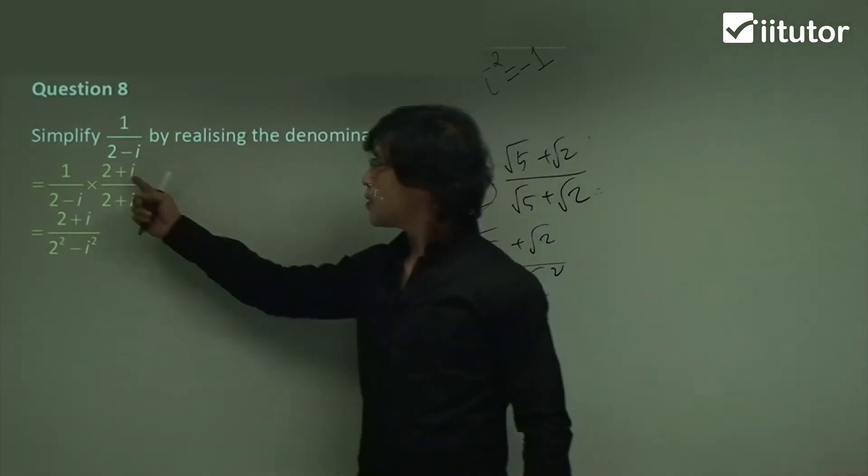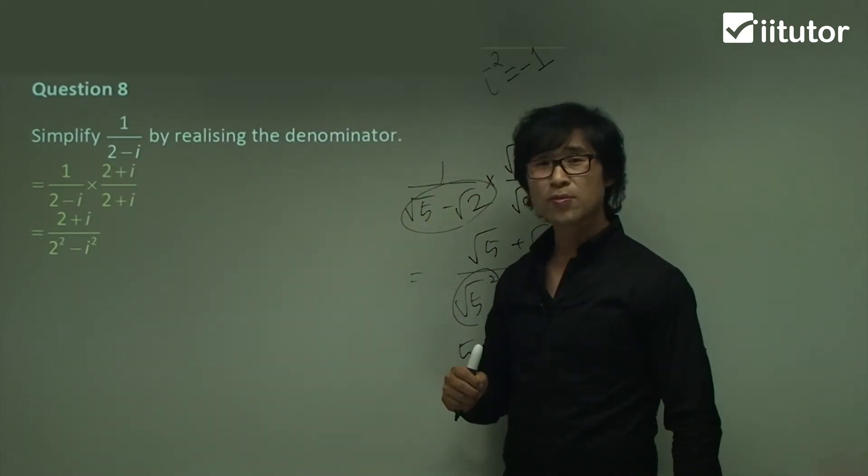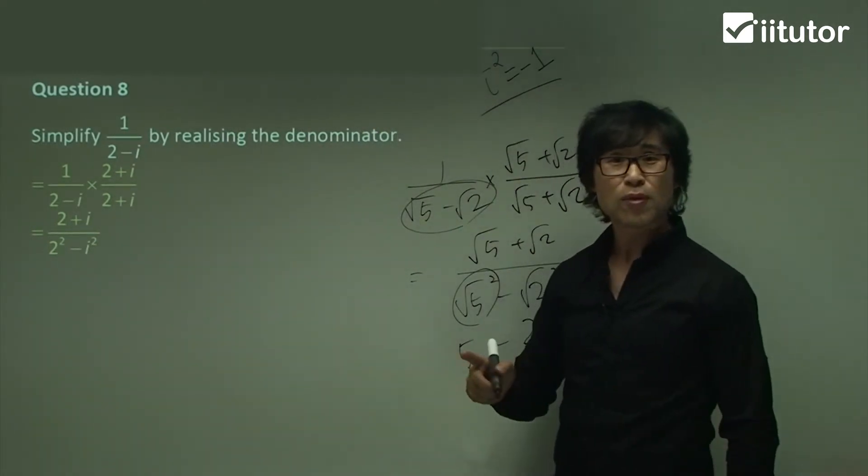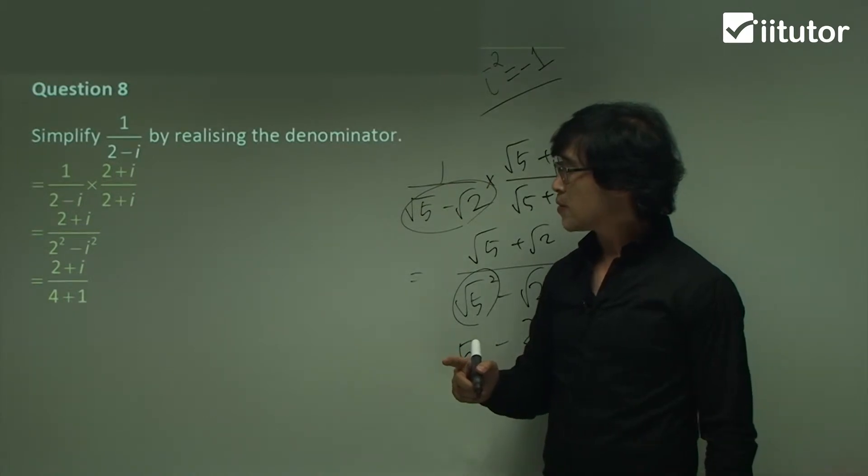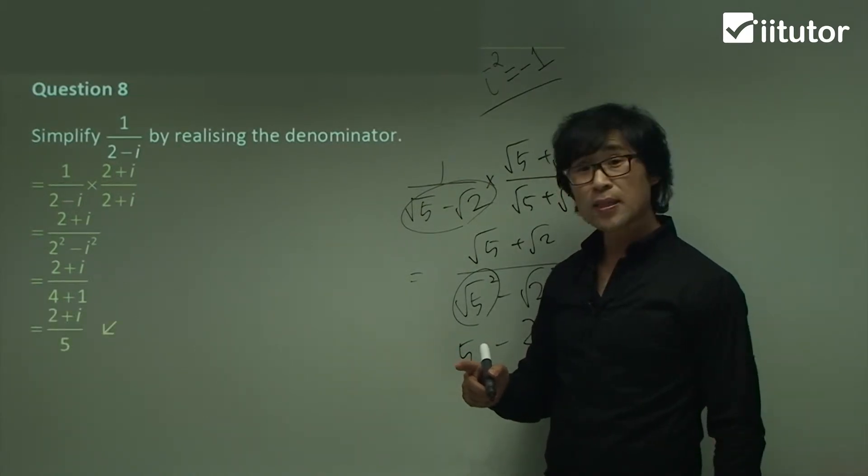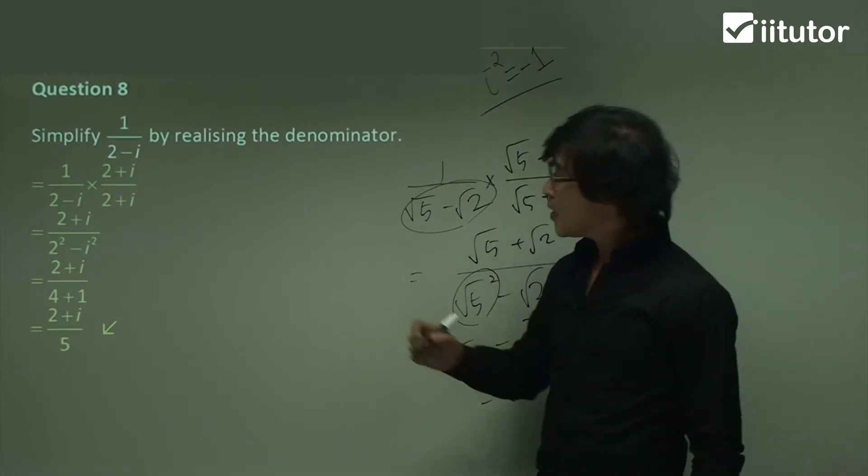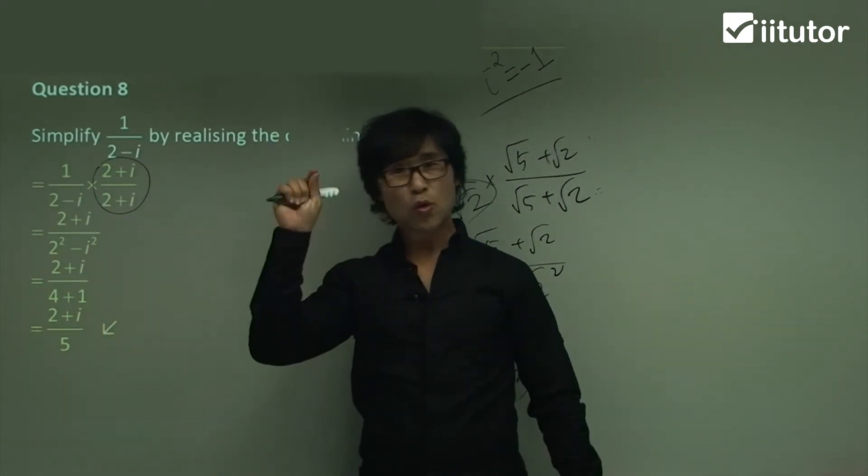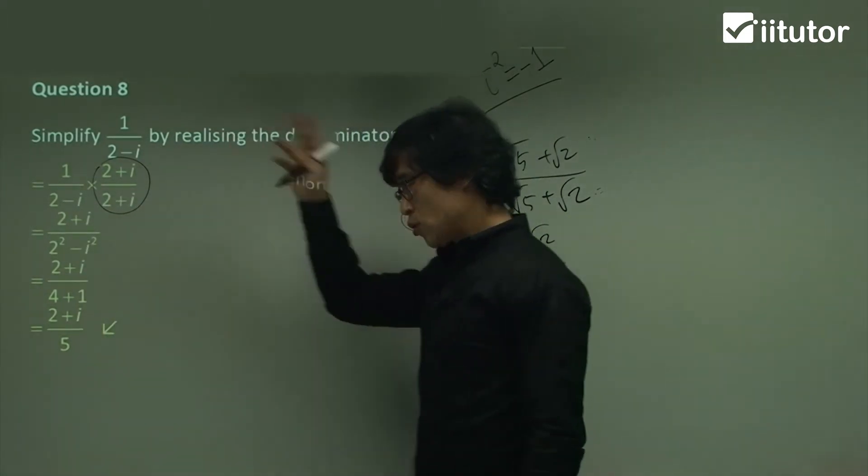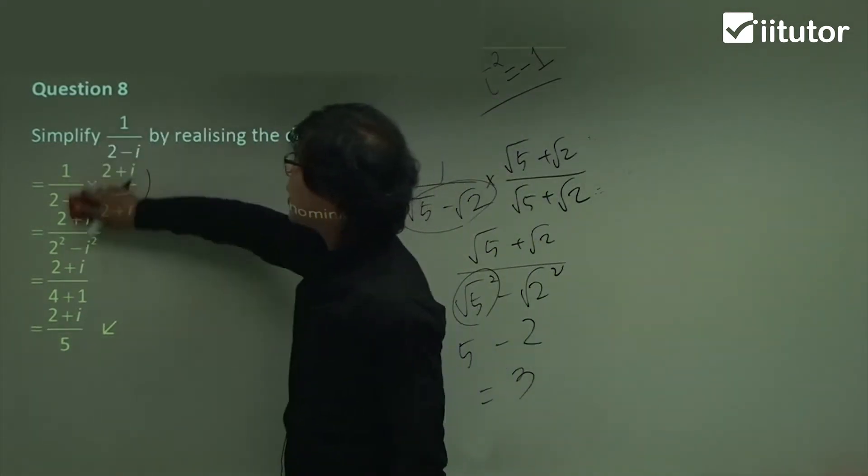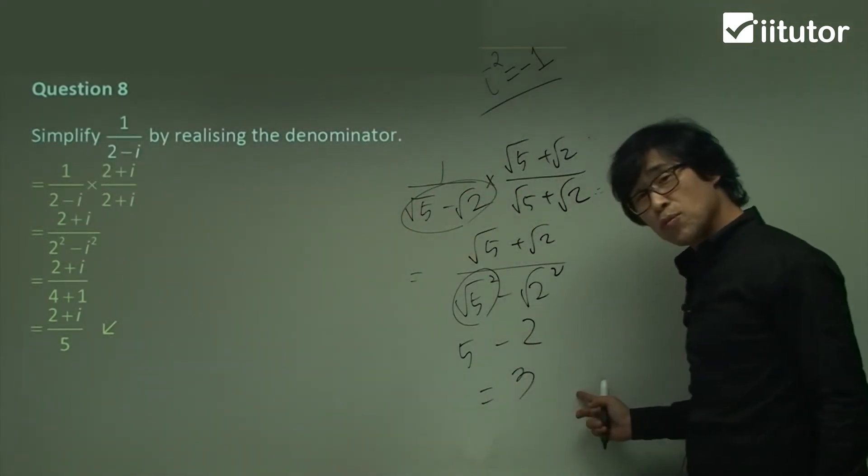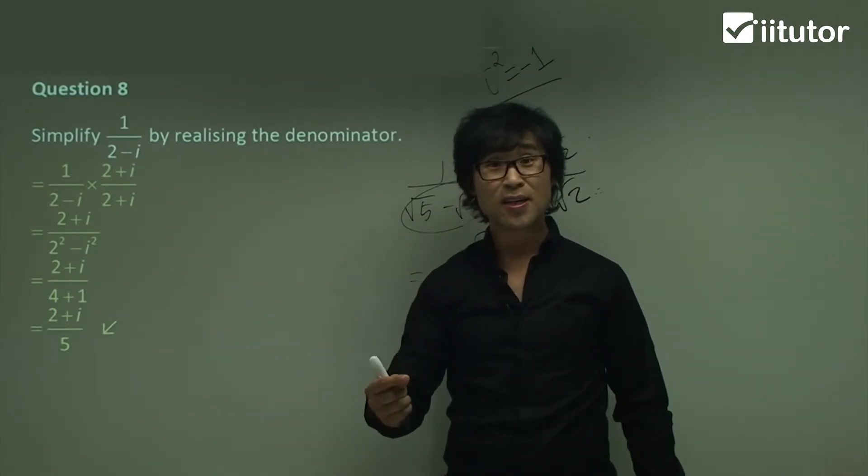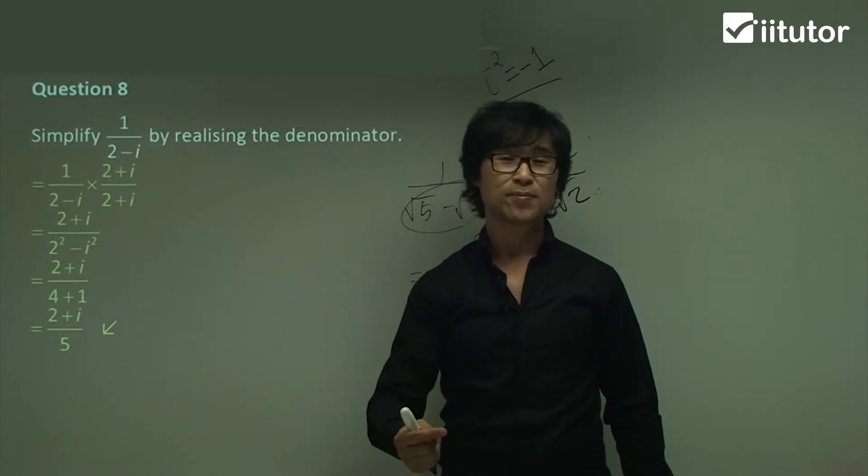And then, yeah, 1 times 2 plus i. It remains just 2 plus i. i squared equals negative 1. So i squared is negative 1. It becomes plus 1. So 4 plus 1, so 5. So that's how you simplify. Easy? So this is the key part. That's really the key part. No matter what you have here, get the conjugate pair and multiply to the numerator and the denominator. And every process will be exactly the same thing as the rationalizing denominator in year 10 or year 9 or year 8.